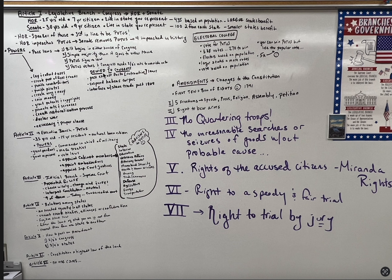There are also powers denied to Congress. They cannot pass ex post facto laws, which are retroactive — meaning you can't make something illegal and then arrest someone for doing something at the time it was legal that is now illegal. You also cannot suspend habeas corpus, which means you must tell someone what they're being arrested for and why, and you can't just throw them in jail for doing nothing. Also, they can't interfere with the slave trade past 1808.